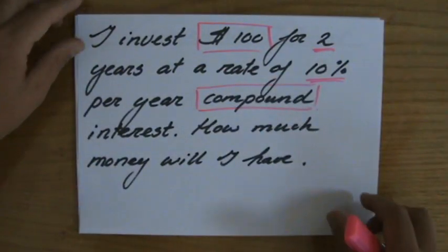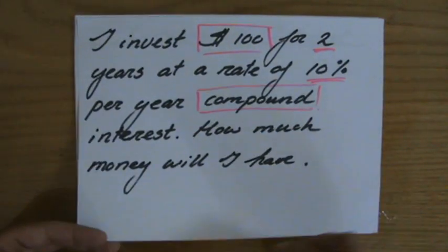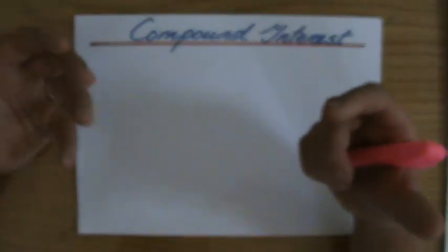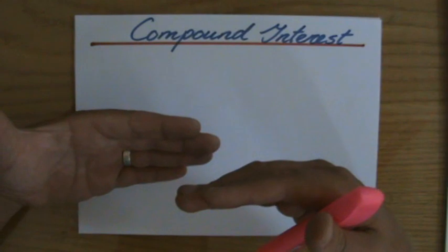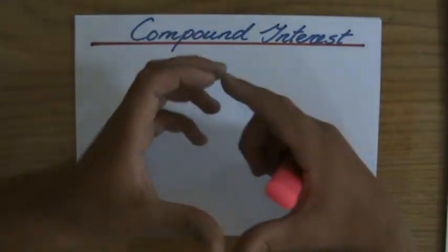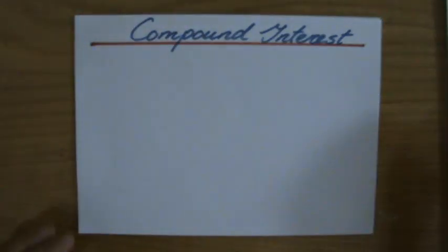But for compound interest, it goes a little bit differently. Because what does compound mean? What does that word mean anyway? It means that it's added on top of each other. Compound figures, it's the addition of two figures.